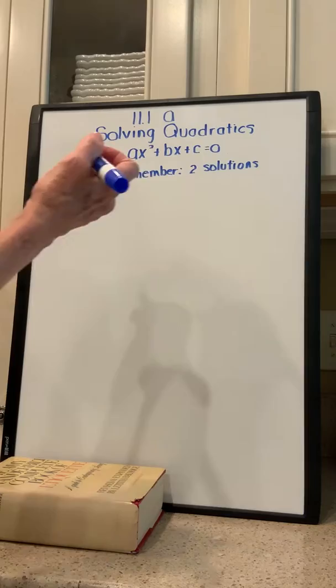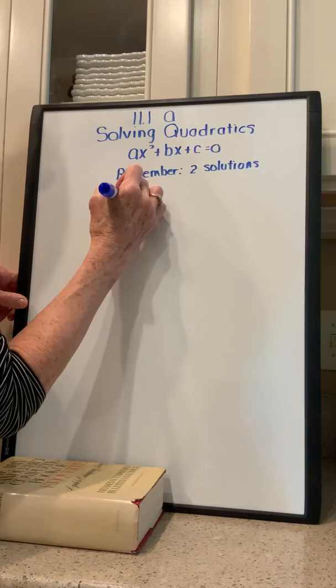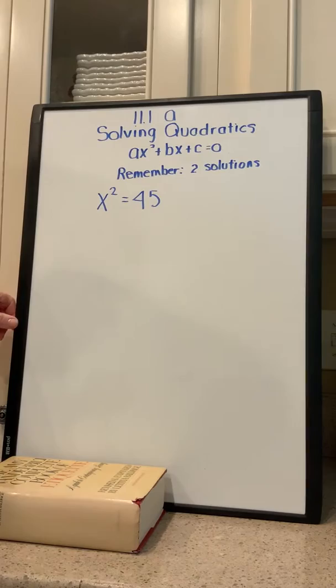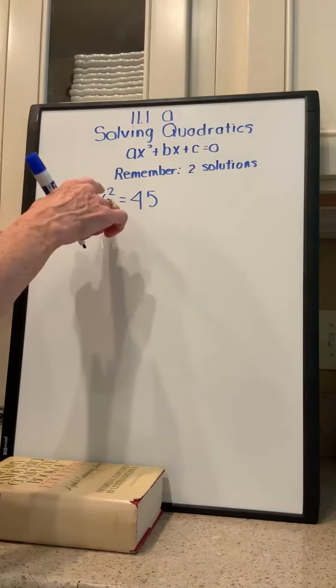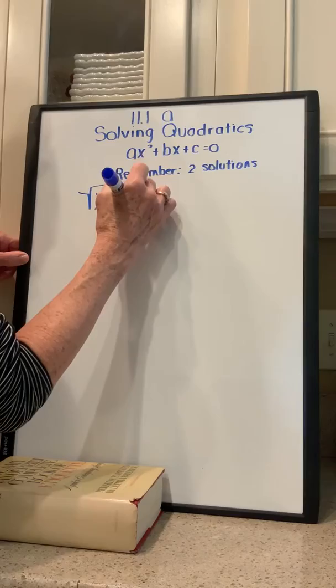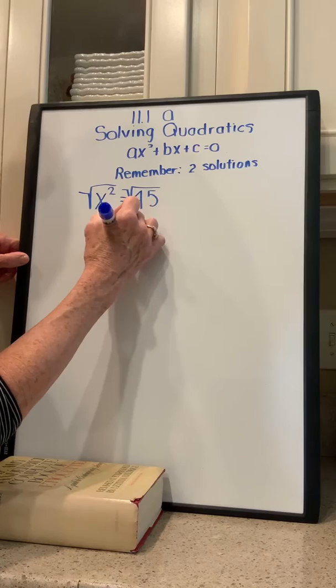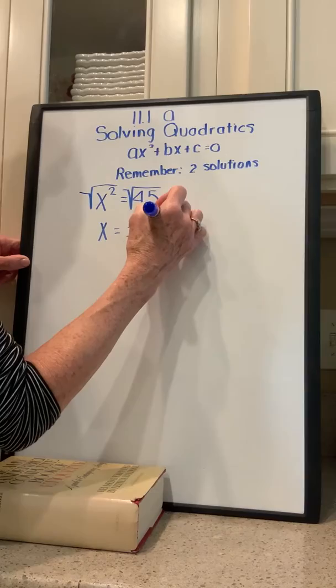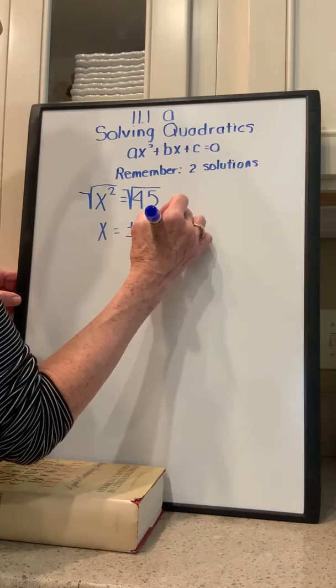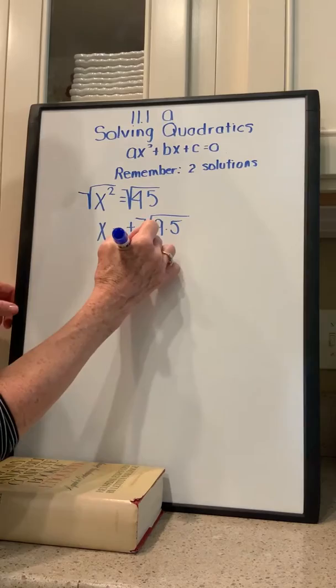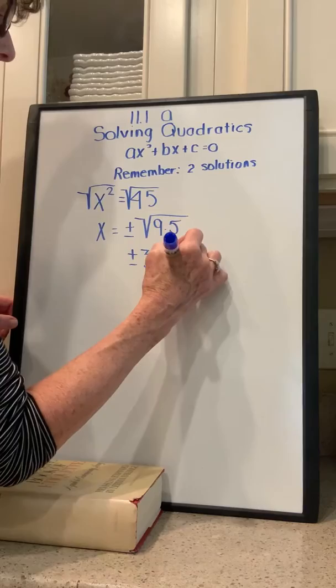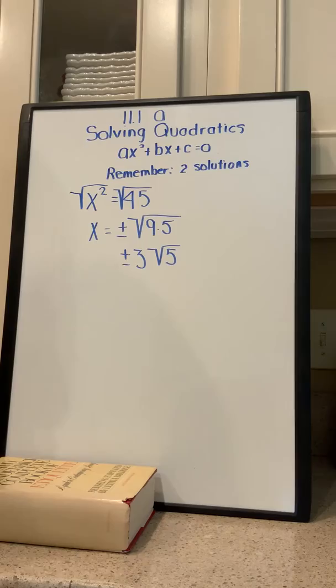It's the square root property, so let's go through and work some problems. If we have x squared is equal to 45, this is a quadratic and we're going to use the square root property. We're going to get two answers. To undo the square, we take the square root of both sides, so x is equal to plus or minus the square root of 45. Remember, 45 has a perfect square in it — 45 is 9 times 5 — and the square root of 9 is 3. So this is plus or minus 3 times the square root of 5. Those are your two solutions.